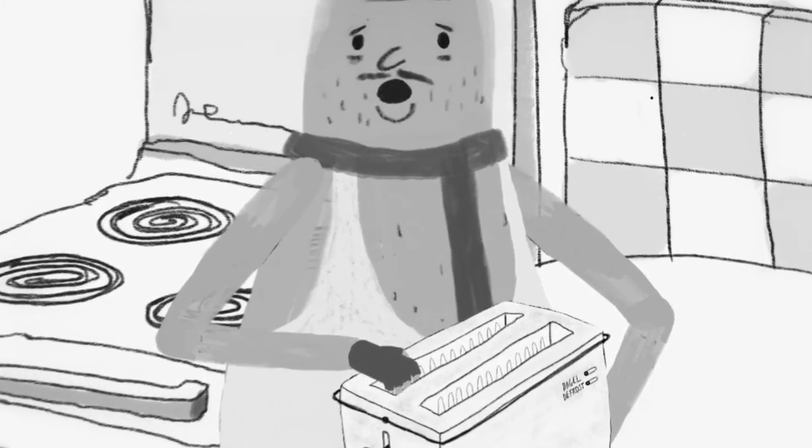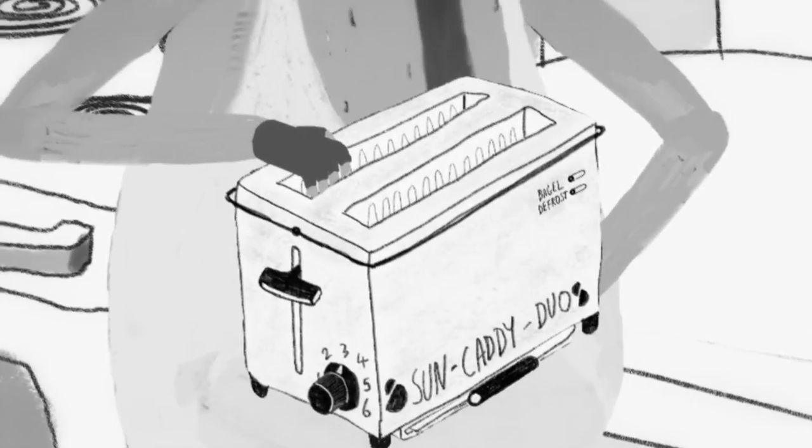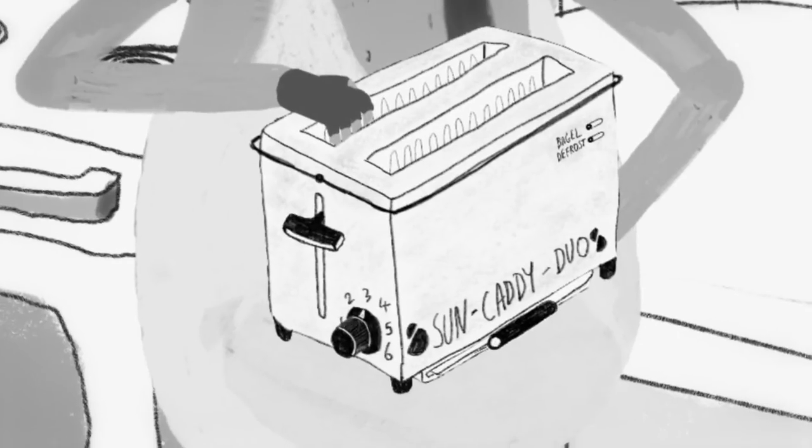So this is what we're looking at today. It's a toaster. Yeah. First up, crumb tray. Show them.